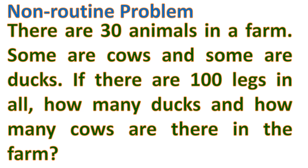Here's an example: There are 30 animals in a farm. Some are cows and some are ducks. If there are 100 legs in all, how many ducks and how many cows are there in the farm? These non-routine problems are often solved using trial and error — keep multiplying 4 legs for cows and 2 legs for ducks until you get 100 legs, though it takes a lot of time. In some cases, you can find shorter solutions.